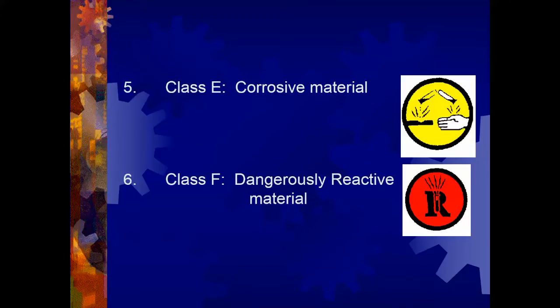And finally, we have Class F for dangerously reactive materials. Often these substances fall under one of the other categories, but the added danger is that storing these materials with certain other materials can allow them to react violently, perhaps causing an explosion or a toxic gas being released. An example is the chlorinated compounds in bleach reacting with the ammonia in window cleaner in a cupboard to release chlorine gas — a substance used in chemical warfare.